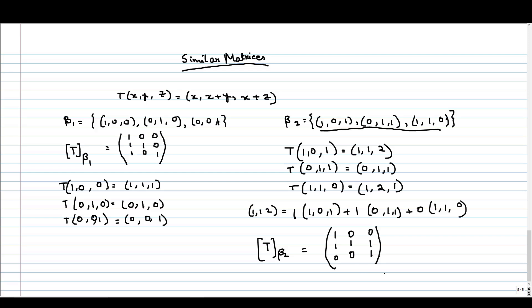I want all of you to check this representation — express all the images as linear combinations of vectors in beta2, then write the matrix representation. So we get T_beta1 and T_beta2 as the matrix representations with respect to beta1 and beta2 respectively.